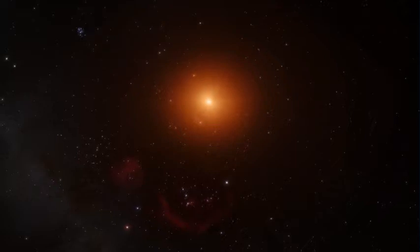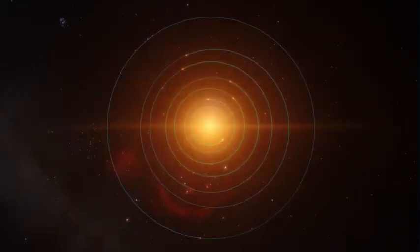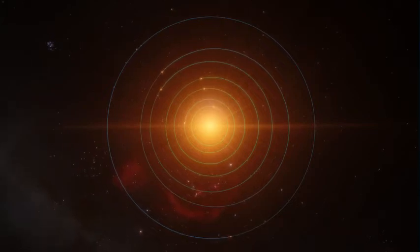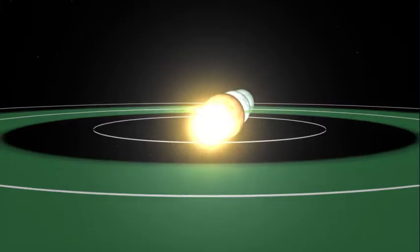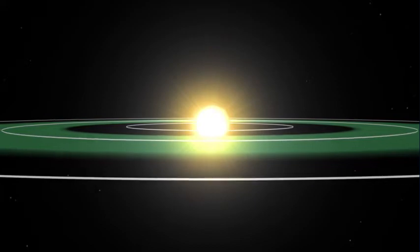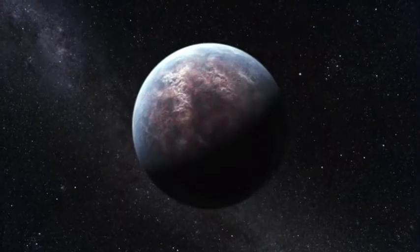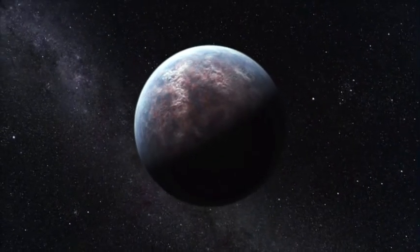If sun disappears from its place, then earth will escape from sun's orbit immediately or after some time. Newton was unable to explain this. In next part of gravity, we will discuss about Einstein's solution on limitations of Newton's theory of gravity.